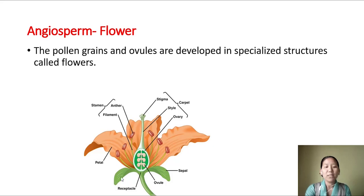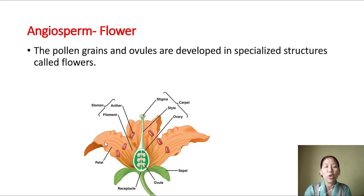The outer whorl consists of a number of sepals and altogether we call them the calyx. Usually they are green in color and provide protection to the flower bud. Inner to it, the whorl consists of petals. Petals are usually large, showy, and brightly colored so as to attract pollinators. All the petals together we call the corolla.